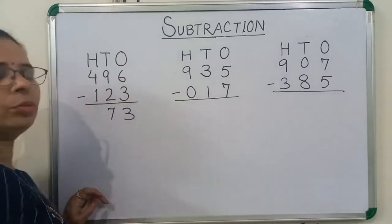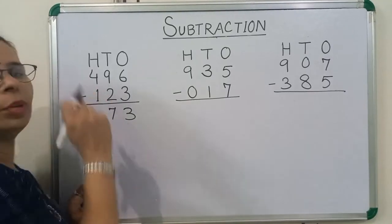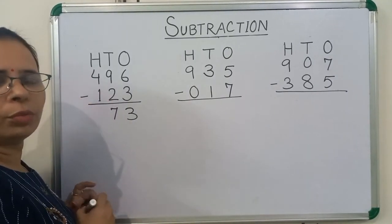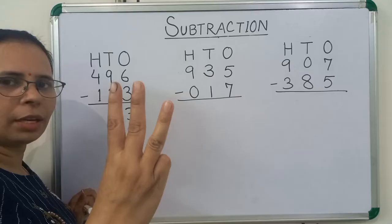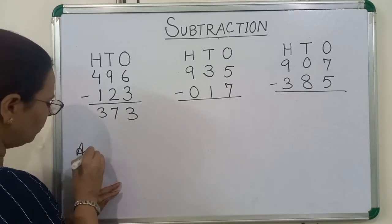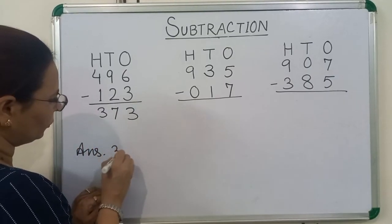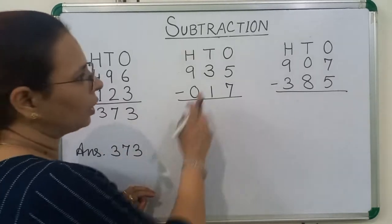Now we will move on to hundreds place. We will subtract 1 from 4. What comes after 1? 2, 3, 4. How many fingers are out? 3. So we will write here 3. Our answer is 373. Now we will solve next question.